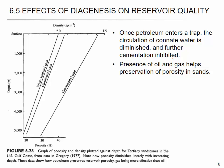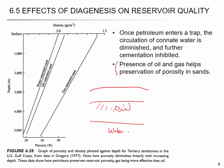Once you have petroleum that's trapped, the circulation of connate water is diminished and further cementation is eliminated. When you have a sedimentary formation in a trap, the hydrocarbon accumulates and water doesn't move, so there's minimal chemical reaction. Presence of oil and gas helps preservation of porosity in sand. The oil-saturated sand shows higher porosity than the water-saturated sand, and gas-saturated sand is highest — you can see this on a porosity-versus-depth plot.